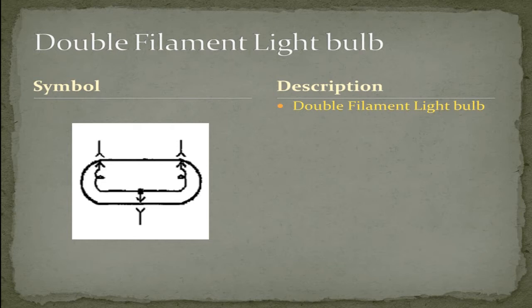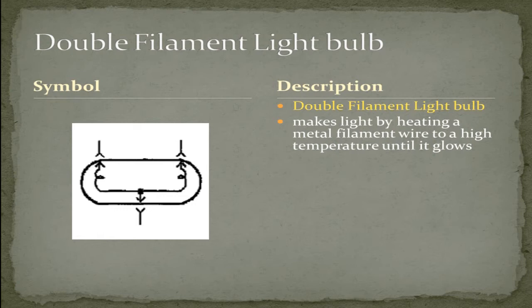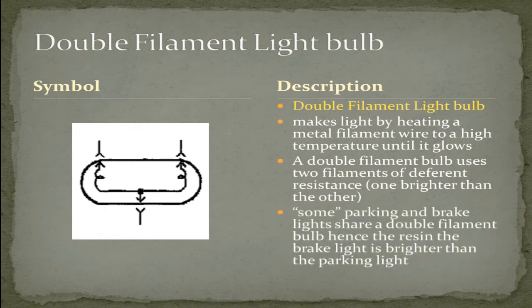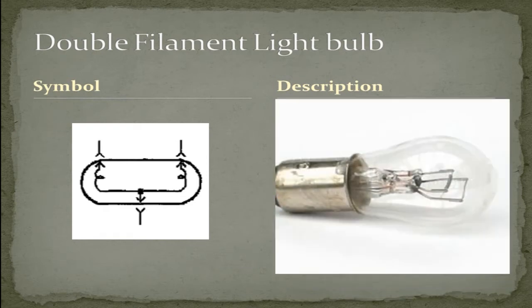A double filament light bulb makes light by heating a metal filament to a high temperature until it glows. However, a double filament consists of two filaments with different resistances, one brighter than the other. Some parking and brake lights share a double filament bulb, hence the reason the brake light is brighter than the parking light because of the two different sized filaments. Here's an example of a 1157 double filament bulb. As you can see, the physical difference in the two filaments.